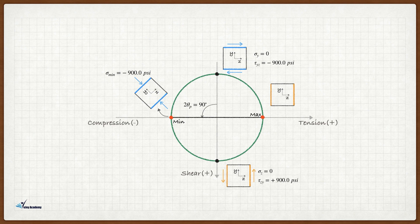Similarly, rotating the stress block with the plus 900 psi shear stress by 45 degrees counterclockwise would give us a new stress block with 900 psi tensile stress.